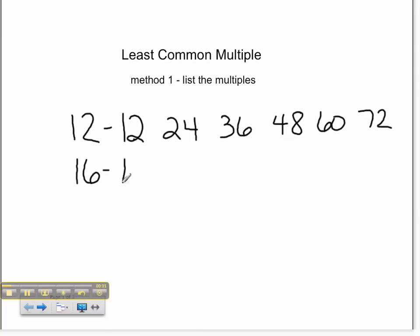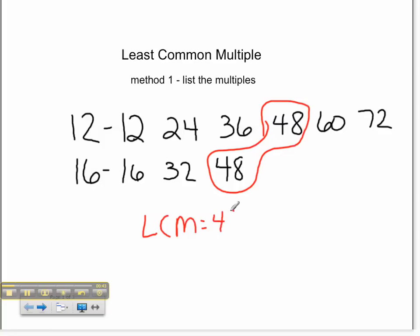Multiples of 16 include 16, 32, 48, and oh, well, could you look at that? I've already found one that they have in common. The least common multiple of 12 and 16 is 48.